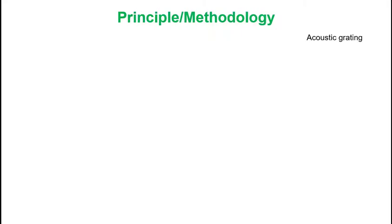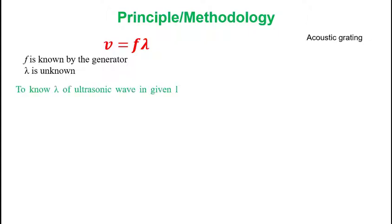So, let us come to the methodology to find velocity of ultrasonic waves. As we know that the velocity of any wave is given by frequency multiplied by its wavelength. In our case, the frequency is known as it is given by the generator. But wavelength of ultrasonic waves is unknown. If anyhow, you know the wavelength of ultrasonic wave, you can easily multiply it with frequency to know the velocity. To know the wavelength of ultrasonic wave in given liquid, we use method of acoustic grating.